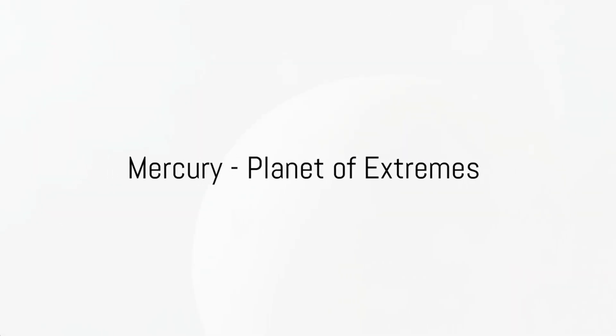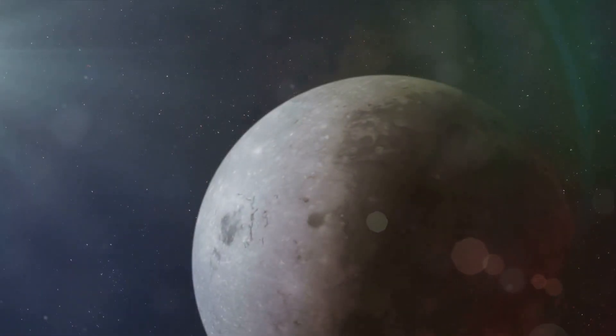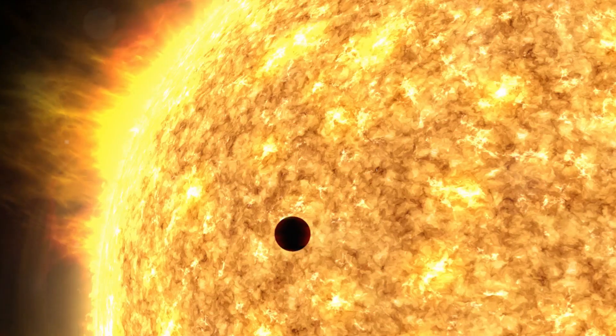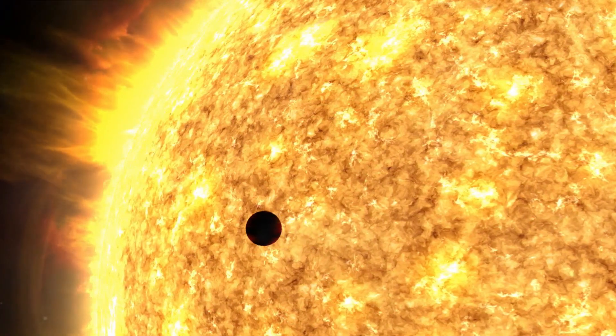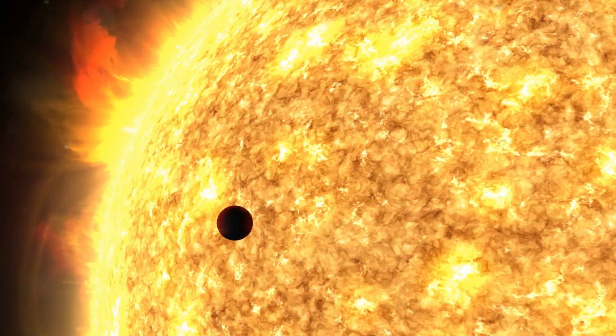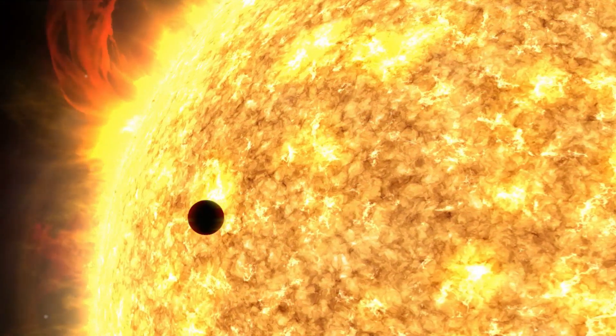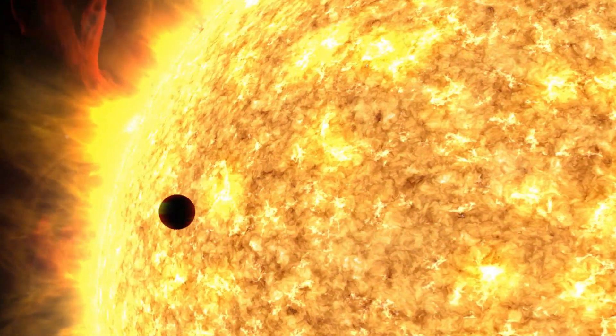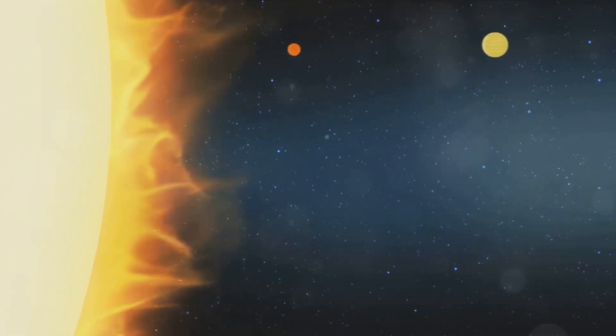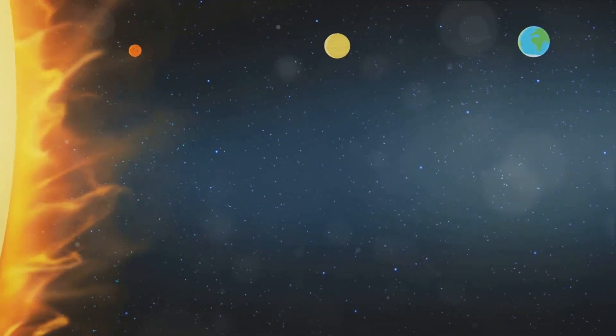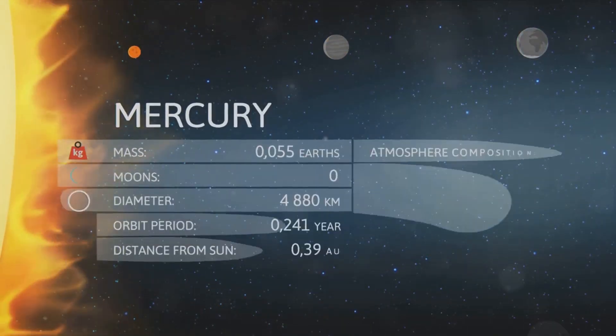This planet of extremes is both scorching and icy as it orbits the sun just 0.38 million miles away. Furthermore, it has the longest day-night cycle in the entire solar system, which means a day on Mercury lasts approximately 59 Earth days. But don't be fooled by its proximity to the sun—Mercury's lack of atmosphere results in dramatic temperature swings.